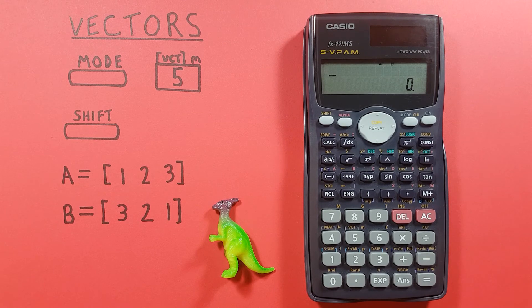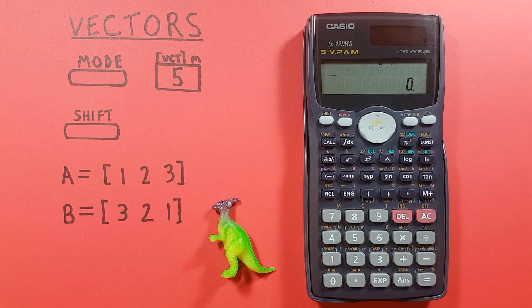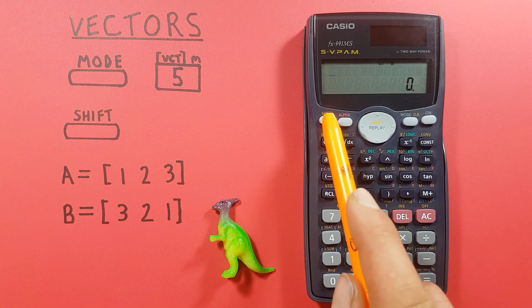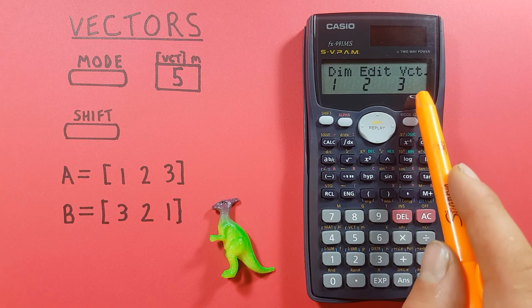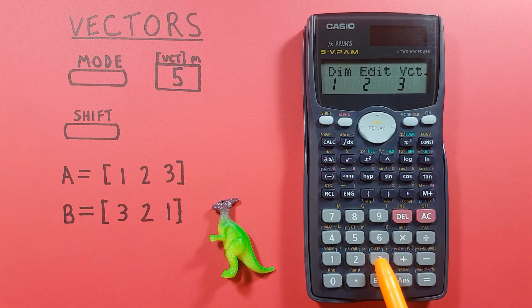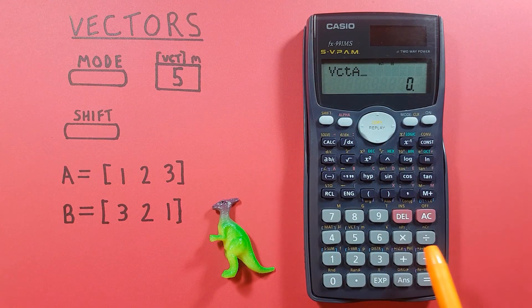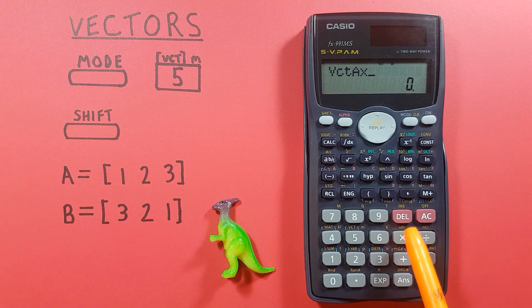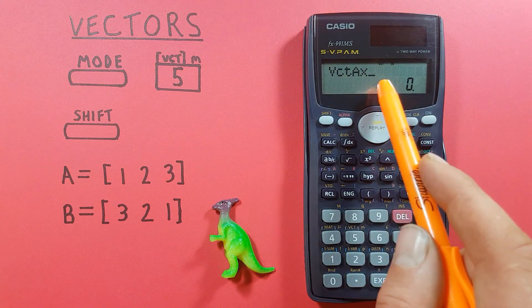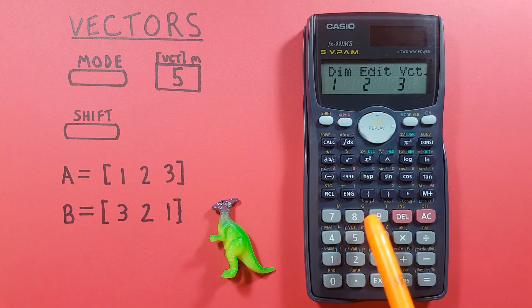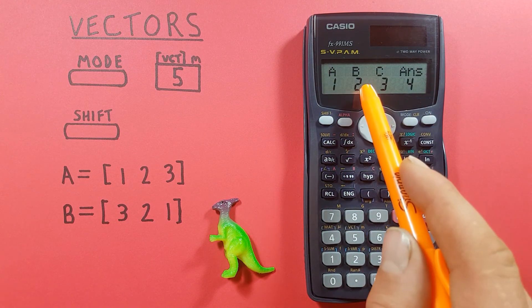Easy enough, and we can also find the cross product of these two vectors. Like before we start by placing our A vector on the screen by going into vectors 1, there we go, and then we'll use the multiplication sign there. Vector A times shift 5, select our B vector.